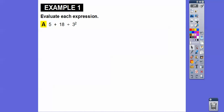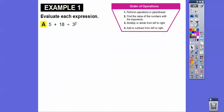We're going to evaluate each expression. Here's the order of operations. These first few don't have any parentheses, so we start with the exponent. Let's do three squared first — three squared is nine, three times three.